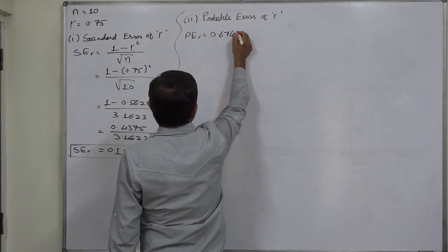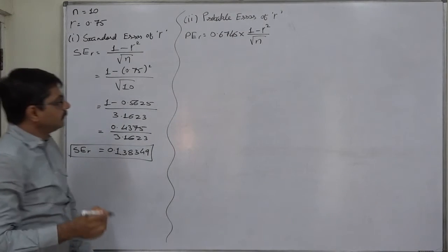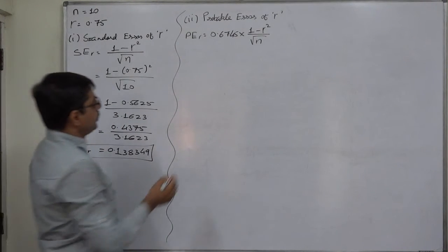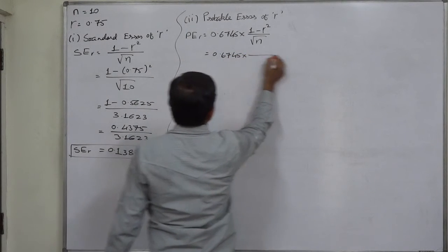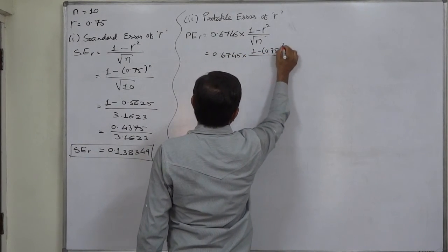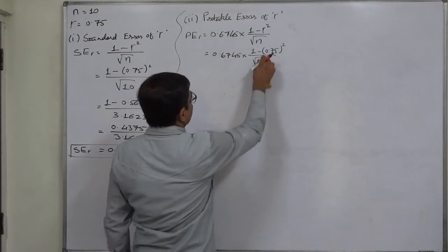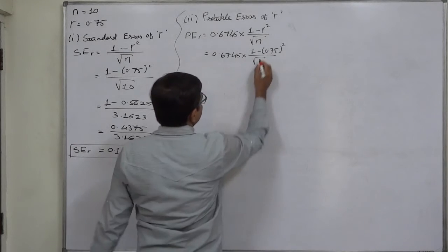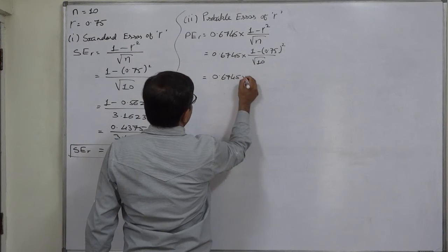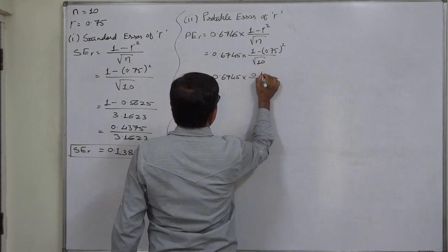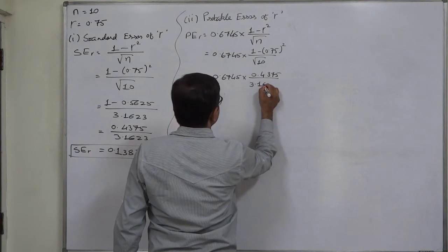The formula of probable error is 0.6745 multiplied by standard error. That is to say, the logical way to write the formula of probable error is: 0.6745 multiplied by (1 minus 0.75 squared) upon square root of n, where n is 10. Let us substitute the values: 0.6745 × 0.4375 / 3.1623.